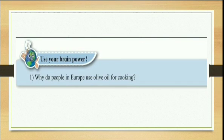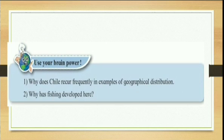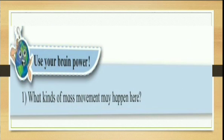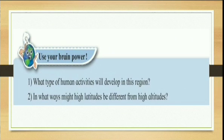You can see all the 'Use Your Brain' sections are being eliminated. 'What factors make this region agriculturally productive?', questions about cold rigor, examples of geographical distribution, why fishing is developed here — all these 'Use Your Brain Power' sections and 'What kind of mass movements may happen here?' are being totally eliminated.